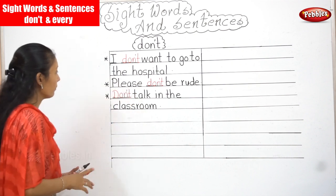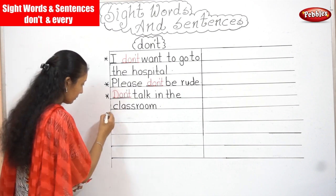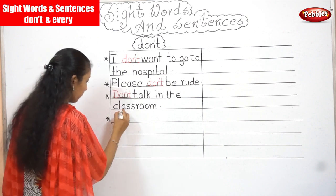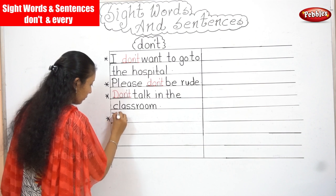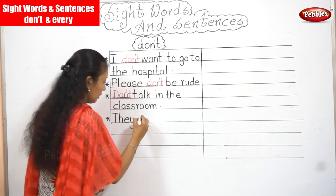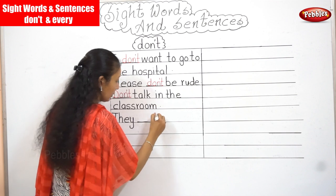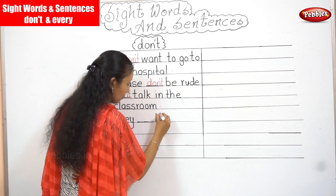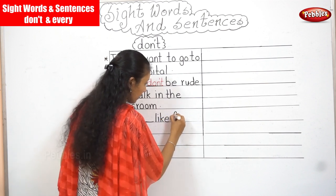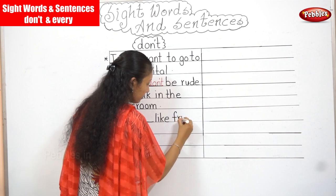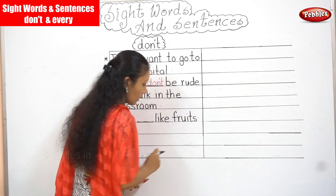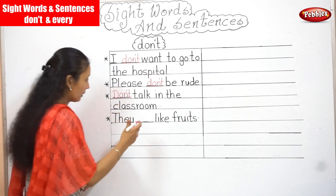Now your next sentence: They — like fruits. So what is the word? Again, don't. They don't like fruits.